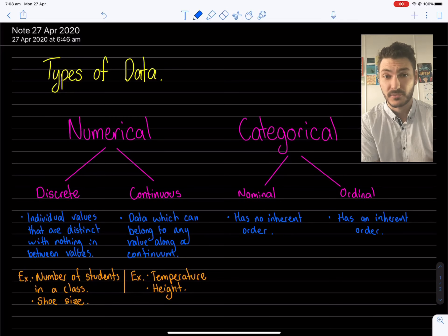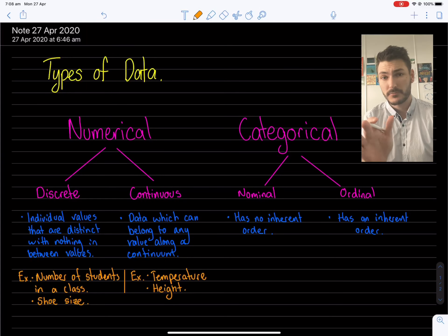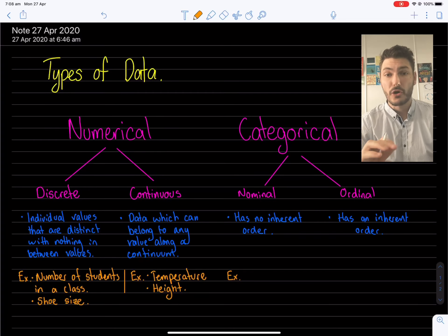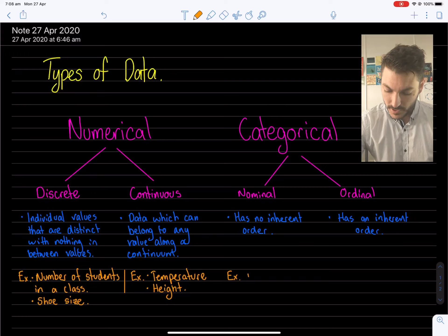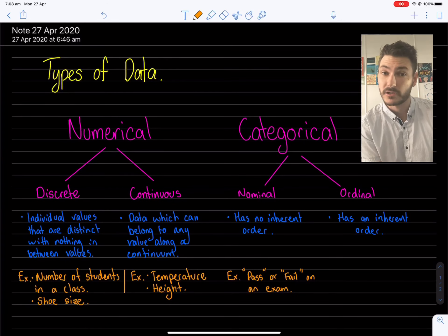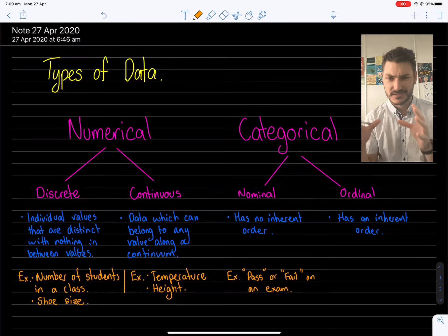But a couple of examples to make it a bit more clear, and I'm going to use pretty much the same context for both of them to make it super clear, I hope. So an example of nominal data is, I might say, pass or fail on an exam. So that's categorical data for a start. It's a category. It's not numbers. And there is, I mean, obviously pass is better than fail, but there's no like scale, there's no order to those two things. They're just completely separate things. They're kind of like our discrete numerical. It's one or the other.